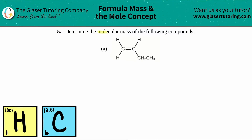Number five: determine the molecular mass of the following compounds — letter A. This compound basically contains just two elements. If I really look at it, I can break it down into two elements: I see a bunch of C's all over the place and I see a bunch of H's. So what I'm going to do first is figure out what this mess is in terms of a chemical formula — I'm going to group all the similar elements together.